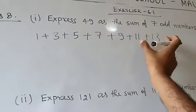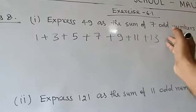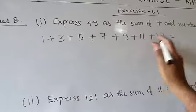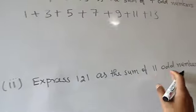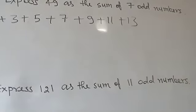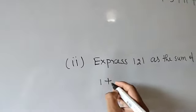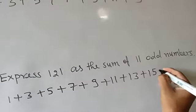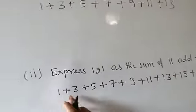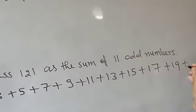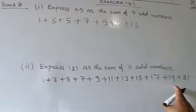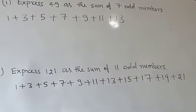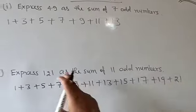These 7 odd numbers have a sum of 7² = 49. For the second part: 121 as sum of 11 odd numbers. Since 11² = 121, write the first 11 odd numbers: 1+3+5+7+9+11+13+15+17+19+21. Counting them gives 11 numbers. Their sum is 11² = 121. That is the complete solution of question 8.